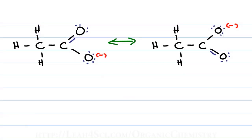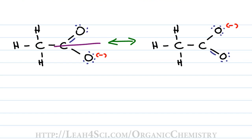In the last video, we looked at how to find the resonance structure for acetate or ethanoate. Looking at the resonance, we have a negative charge moving from one oxygen atom to another, and we can notice there's a plane of symmetry as the electrons move back and forth. This tells us that these two resonance forms are equal major contributors to the resonance of acetate.